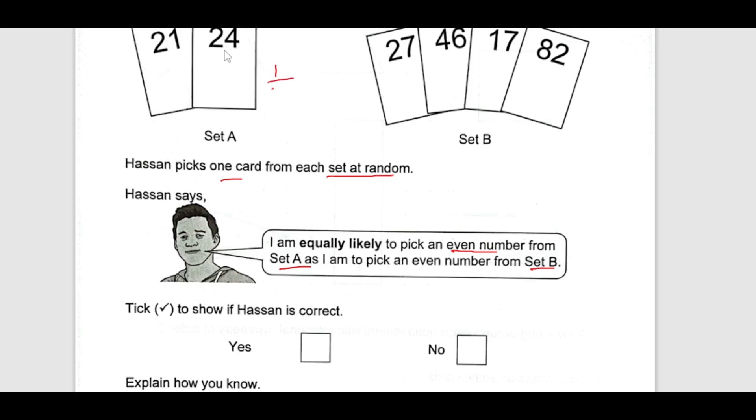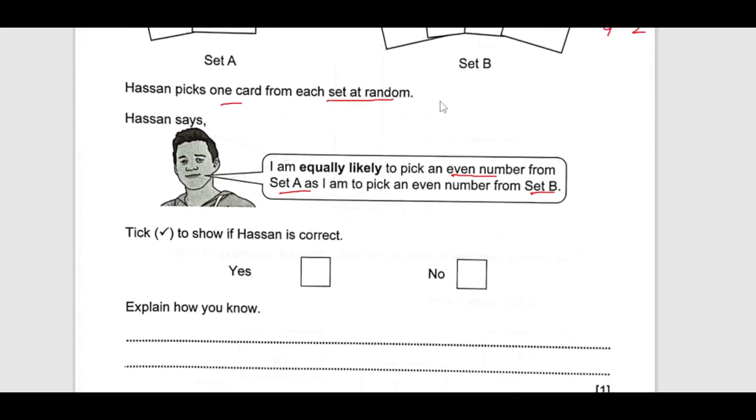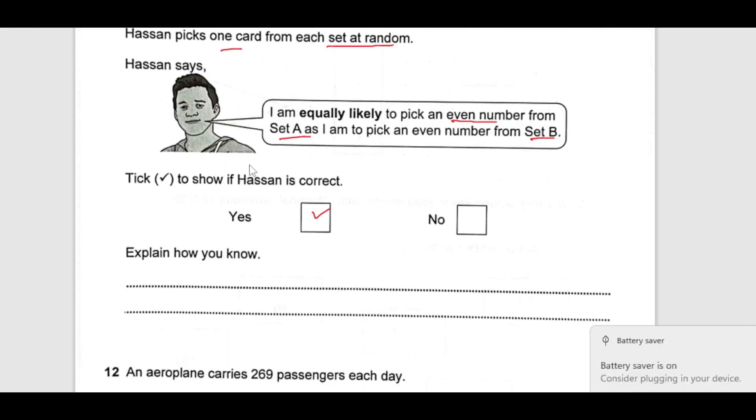We are talking about the even numbers from set A. Even number here is only 1. So, probability is 1 out of 2. Here we have even number 46 and 82. That means 2 over 4 which is also equivalent to 1 over 2. That means he is right. We can say if Hassan is correct yes he is correct. Explain how you see, we can say for set A the probability is 1 over 2 and also for set B it is the probability is 2 over 4 which is 1 over 2.